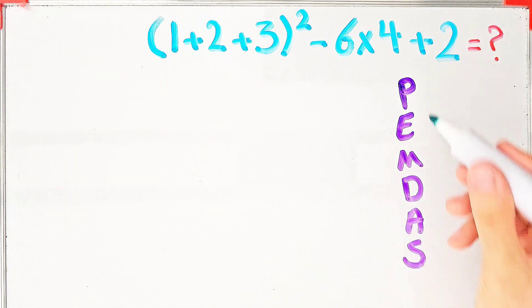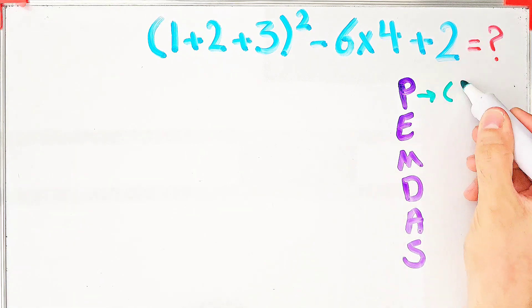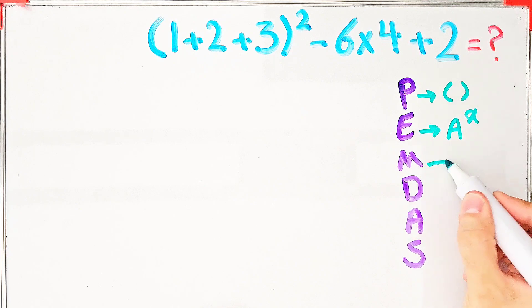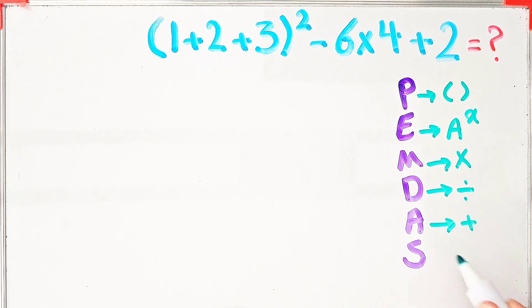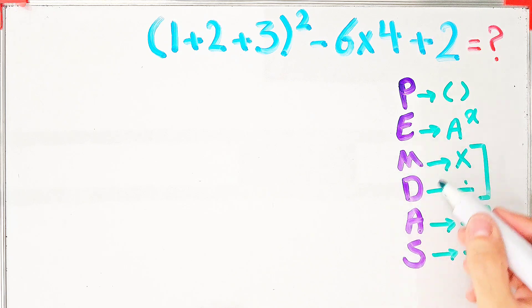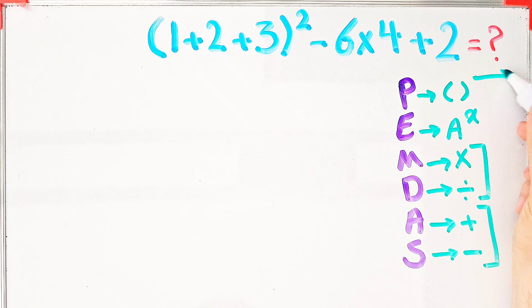In this rule, P stands for parentheses, E stands for exponent, M stands for multiplication, D stands for division, A stands for addition, and S stands for subtraction. Multiplication and division have the same level of priority. Also, addition and subtraction have the same level of priority. When we have both in an expression, we start from the left and simplify the question.